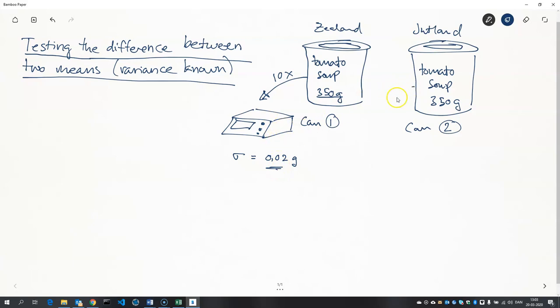And I'll do the same for the other can here. I'll do ten weighings and presumably I'll get ten more or less different results. And so how will I determine whether these two cans actually weigh the same? Can I make any statistical evidence to say whether or not they do weigh the same?